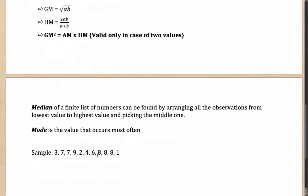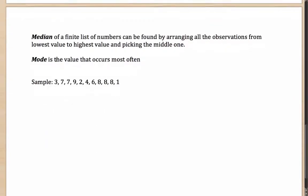Moving on to the median and the mode. Median of a finite list of numbers can be found by arranging all the observations from lowest to highest and picking the middle one.